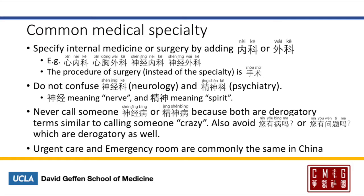The correct way to ask if someone has a neurological issue, you can say 您有神经疾病吗? And to ask someone if they have any psychiatric issues, you can say 您有任何精神类疾病吗? Or 心理疾病吗? Lastly, urgent care and emergency room are commonly the same in China, so it may be a good idea to discuss the difference with your patient.